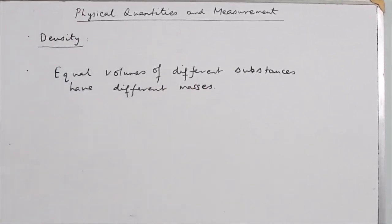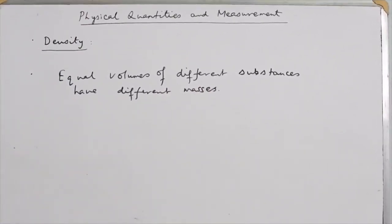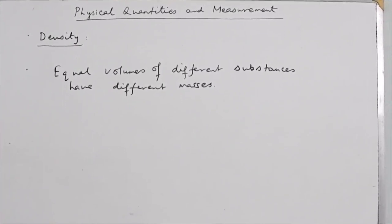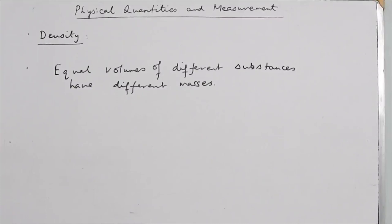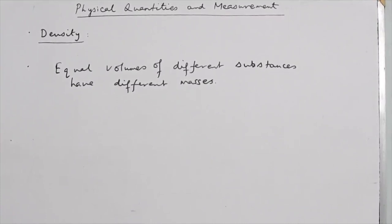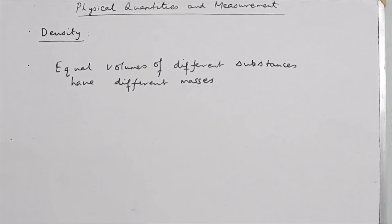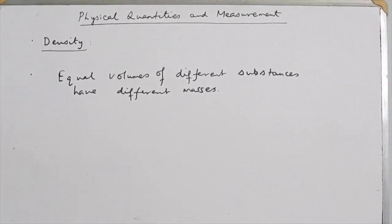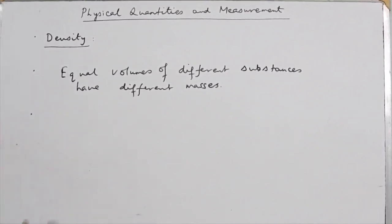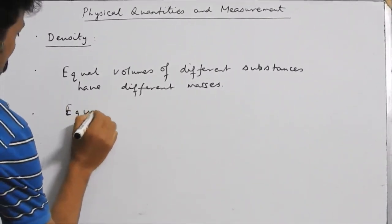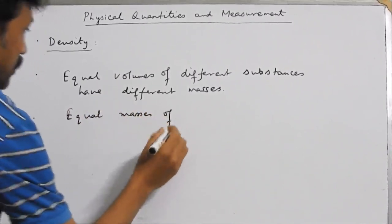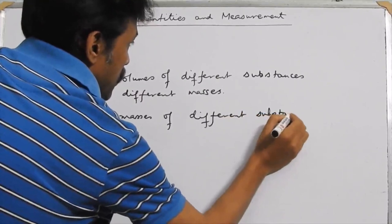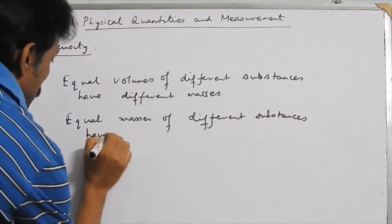If you consider equal volumes of two different substances — say 100 cm³ of cotton and 100 cm³ of iron — both volumes are equal, but iron will have a comparatively larger mass than an equal volume of cotton. Similarly, equal masses of different substances will have different volumes.